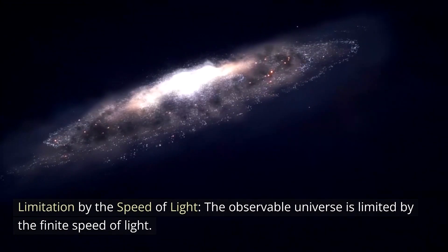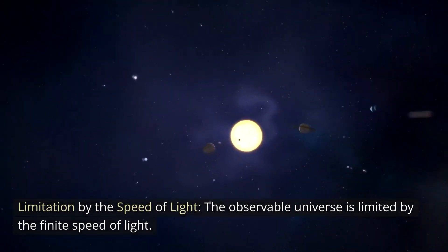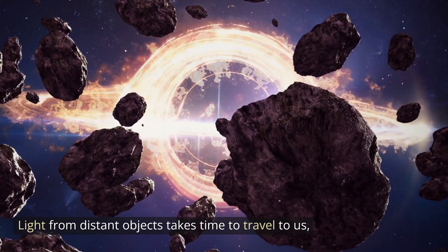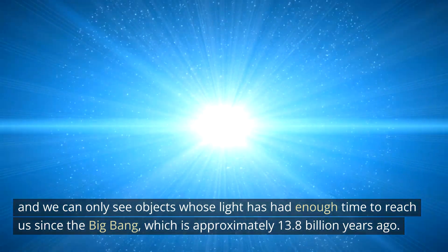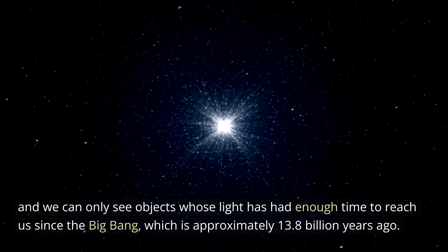Limitation by the Speed of Light: The observable universe is limited by the finite speed of light. Light from distant objects takes time to travel to us, and we can only see objects whose light has had enough time to reach us since the Big Bang, which occurred approximately 13.8 billion years ago.